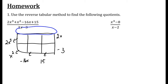We always start by putting in that 2x cubed — it has to go there. What times 2x gave me 2x cubed? Well, x squared times 2x is 2x cubed. We finish up that column by multiplying: x squared times negative 3 is negative 3x squared. Then we start the process over by filling in the next diagonal box, asking: what plus negative 3x squared gave me 1x squared? Well, 4x squared minus 3x squared gave me 1x squared.